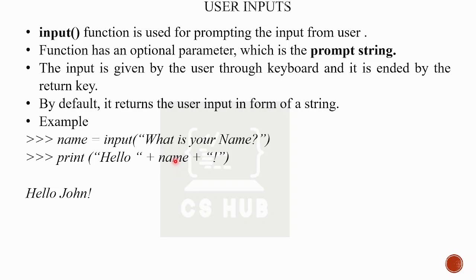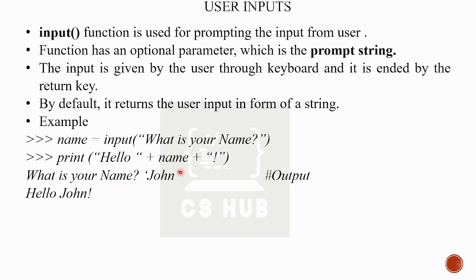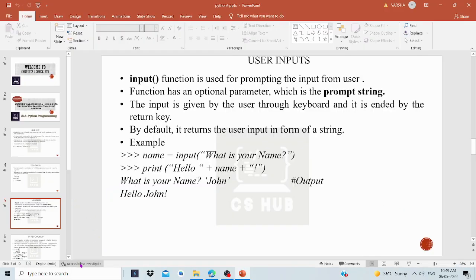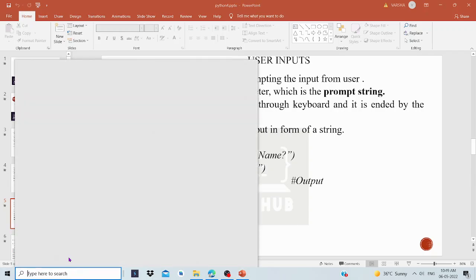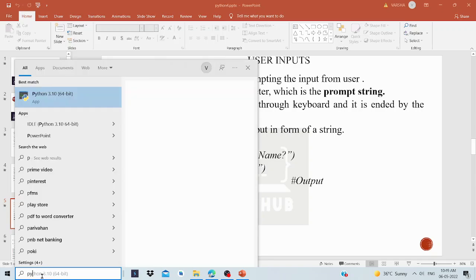Now, what is your age? If you enter a value like 20, and try to concatenate it with a string — for example, name plus 20 — this will fail because the input() function always returns a string. So entering 87 stores it as the string '87', not the integer 87.